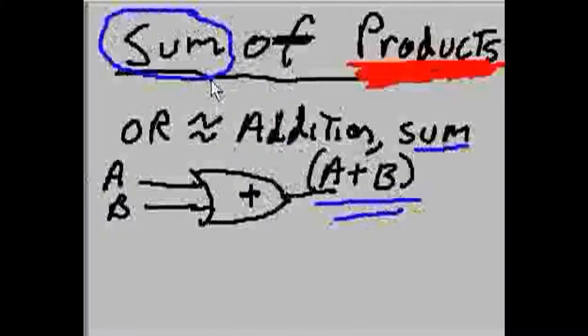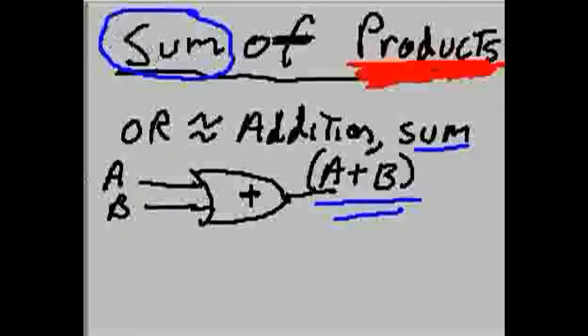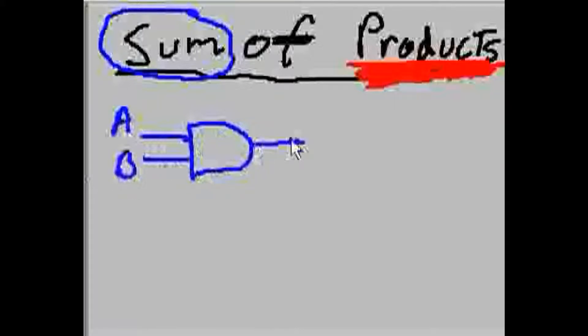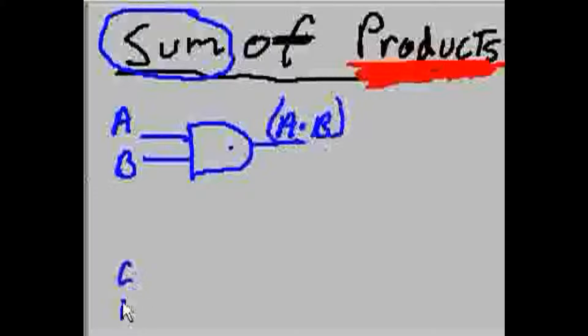Okay. So, now we have an individual sum. We showed an individual product. When do you have a sum of these products? Let's say you had an AND gate over here with A and B on it. And what comes out of it? A ANDed with B. Now, over here, you had a C and a D.